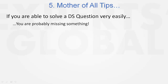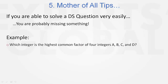Let me explain this with an example. Look at this question: highest common factor of four integers A, B, C, and D. Please try solving this. Now, 90% of students get this question wrong, thinking that even on combining they don't have the value of D, and therefore the question cannot be solved — so the answer should be option E. This is what I'm trying to teach: if this was so simple, it would not be a GMAT question. There must be a catch somewhere.